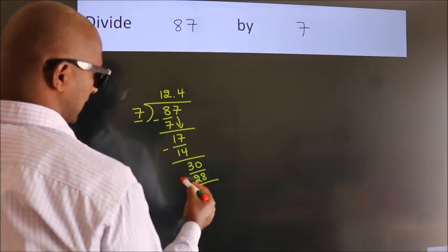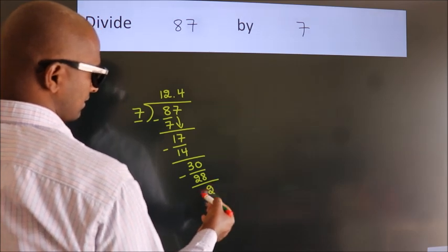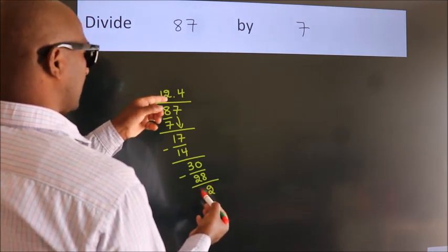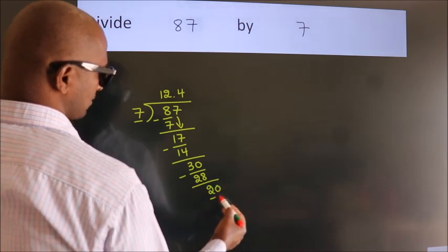Now we subtract. We get 2. After this, we already have the decimal. So directly take 0. So 20.